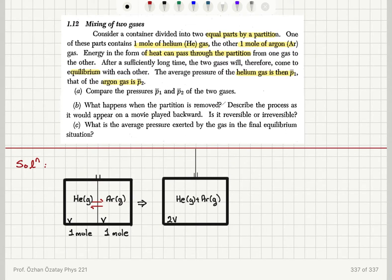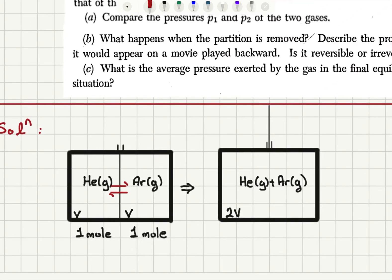So we have a container that is isolated. It's filled with helium and argon gas. There is a partition in between. So we have equal volumes on two sides, V and V, and we have one mole of helium gas and one mole of argon gas.